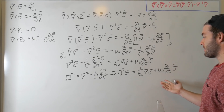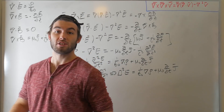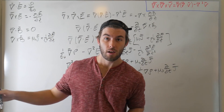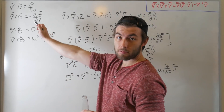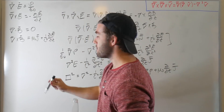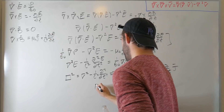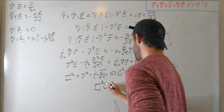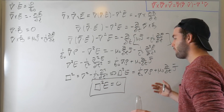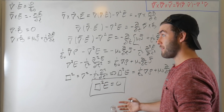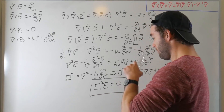Now for all intents and purposes we're done here, but if we make some simplifying assumptions — like an electric wave propagating in free space where there's nothing for it to interact with, meaning no charges — then the charge density and the current density go to zero, and we get box-squared E equals zero. That's the vacuum wave equation for the electric field, where there are no charged particles for it to interact with.